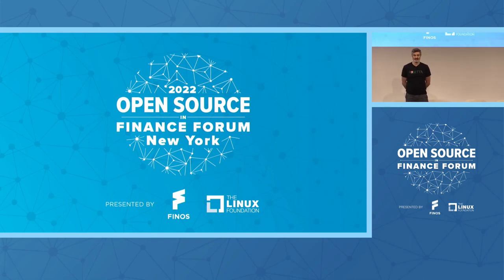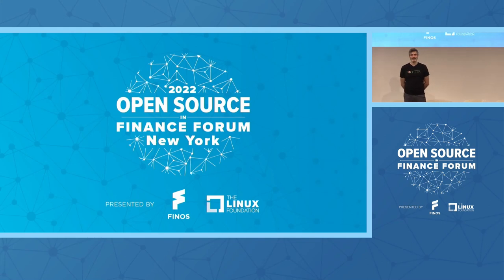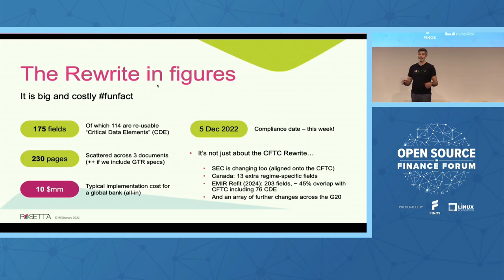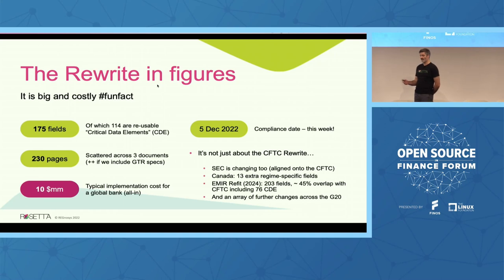Canada is also changing more or less in the same way, with 13 extra regime-specific fields. EMIR refit is going to go live in April 2024. There are even more fields to report — more than 200 — though about half actually overlap with the CFTC. There is an array, or a barrage, of further changes coming across the G20 in the next few years.